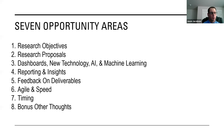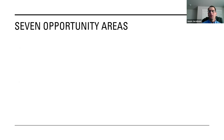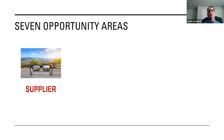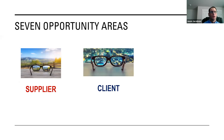The seven topics are: research objectives, research proposals, dashboards, reporting insights, getting feedback, agile and speed/timing — and if I have a little bit of time at the end, I threw in an eighth bonus round. The way I'm going to talk about each of these is starting with how does a supplier view this — what is their lens, their perspective, what are they really thinking? And then what does a client really feel — how are they viewing that topic area?